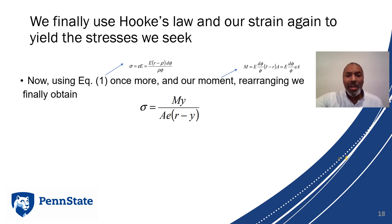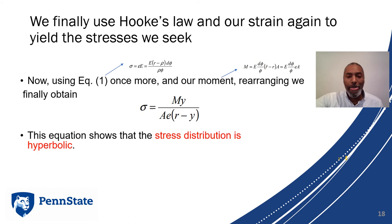Finally, we use Hooke's Law and our strain again to yield the stresses. Our stress equals E epsilon, substituting for our strain. That yields sigma equals M y over A E times one over r minus y.